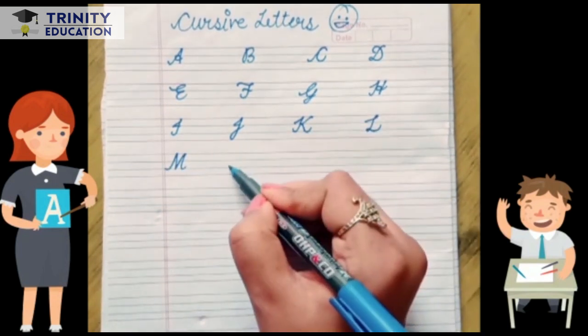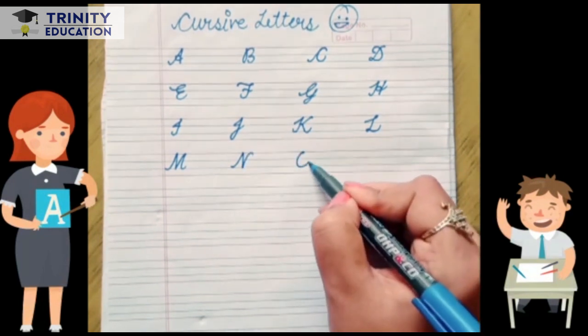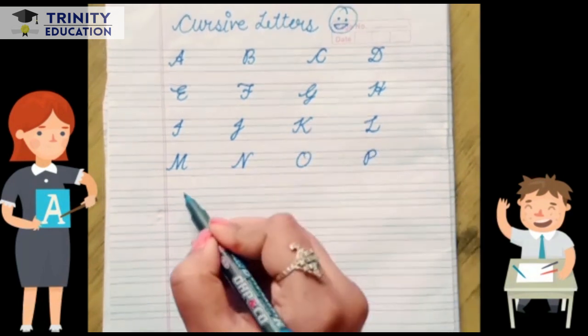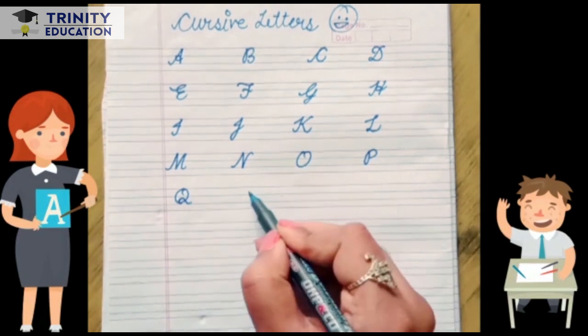M for mango, N for nest, O for orange, P for parrot, Q for queen.